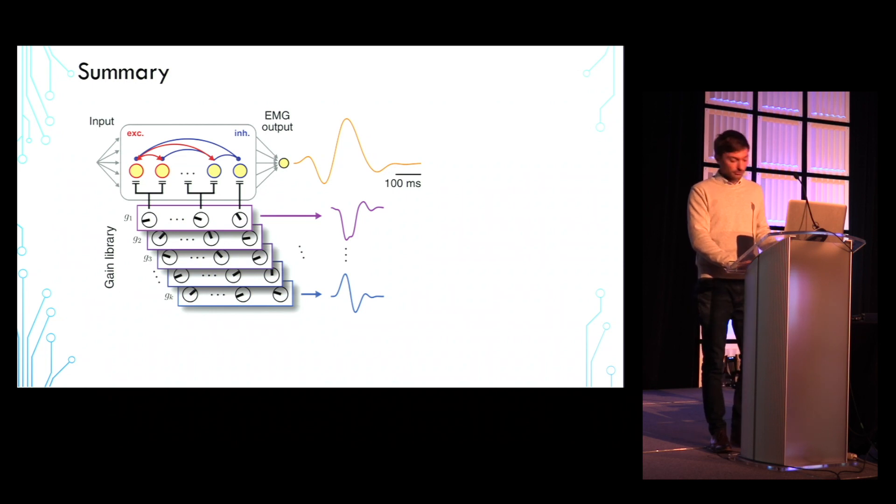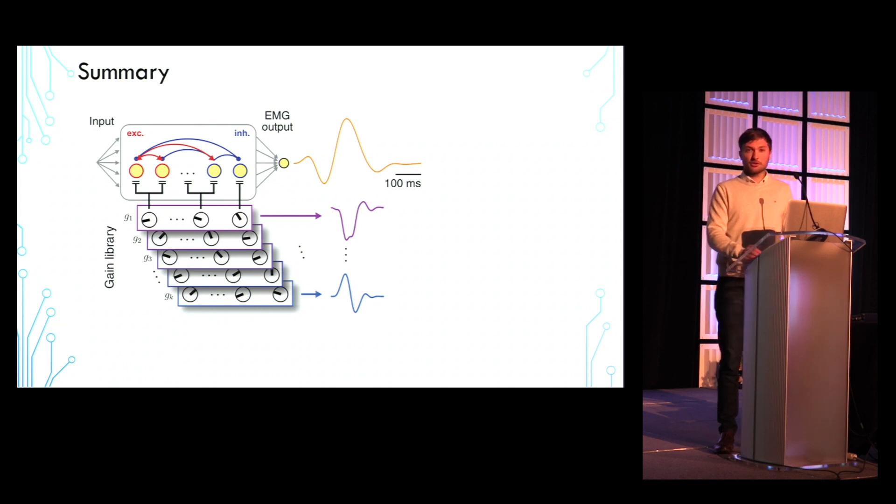I was wondering if you get more flexibility out of a gain library of a particular size than you would out of a library of directions in which you could perturb the connectivity matrix via some sort of modulation. Let's say here you have k different directions in which you can perturb the gain. Imagine you had k different directions in which you could perturb the connectivity matrix, k different base library matrices. Do you have a sense of which of the two strategies would give you more flexibility?